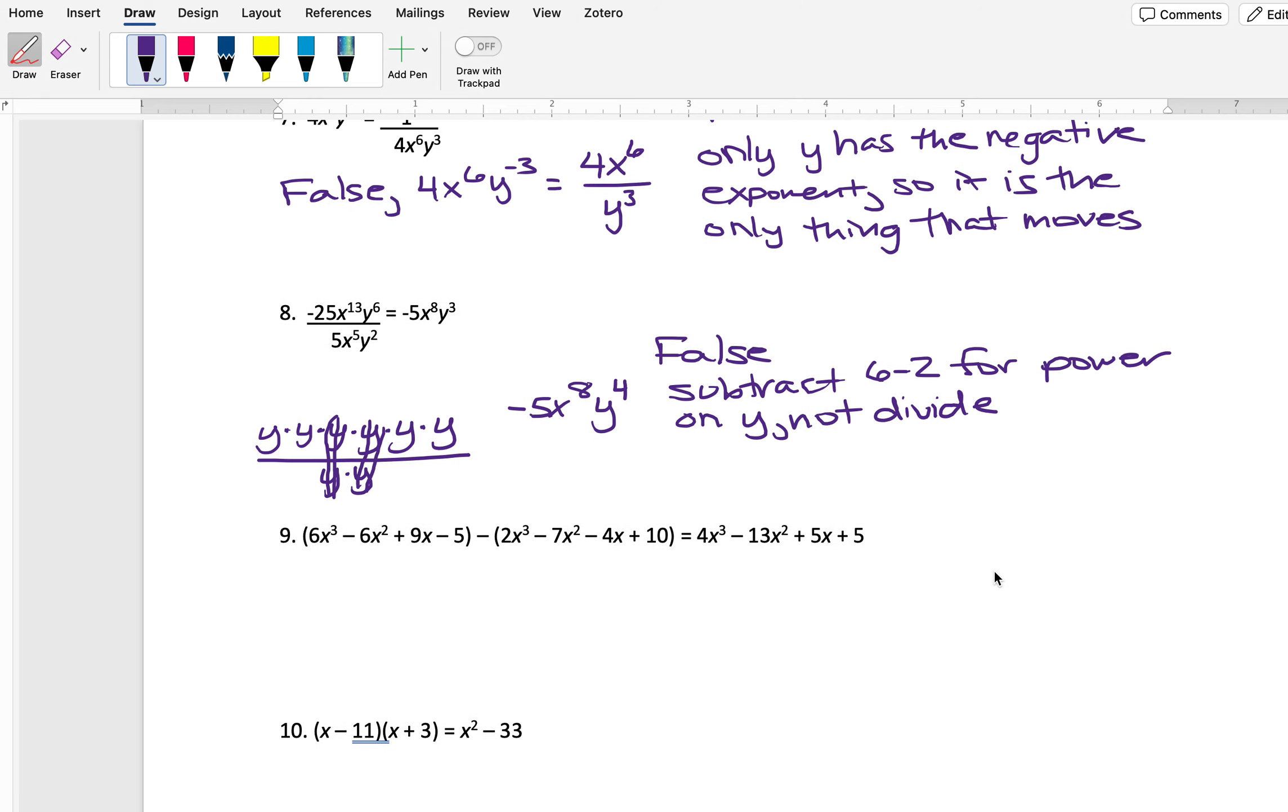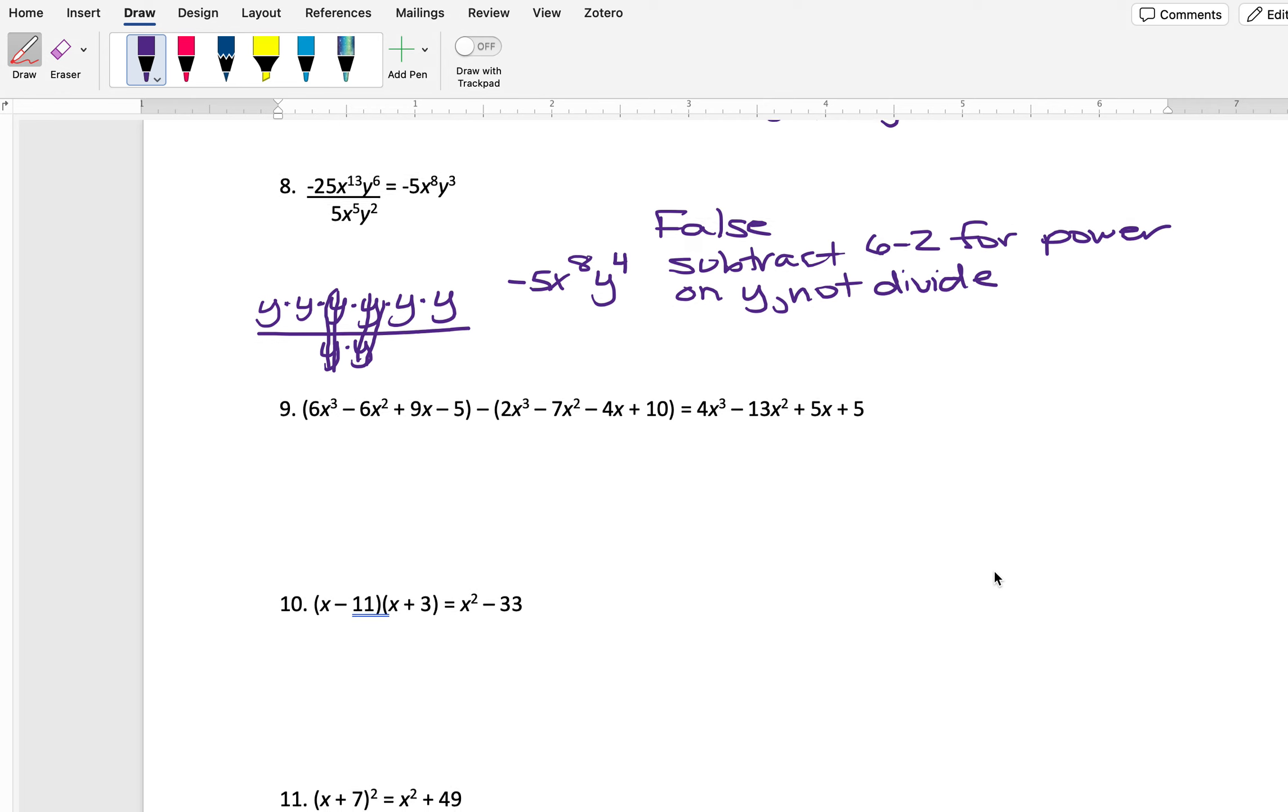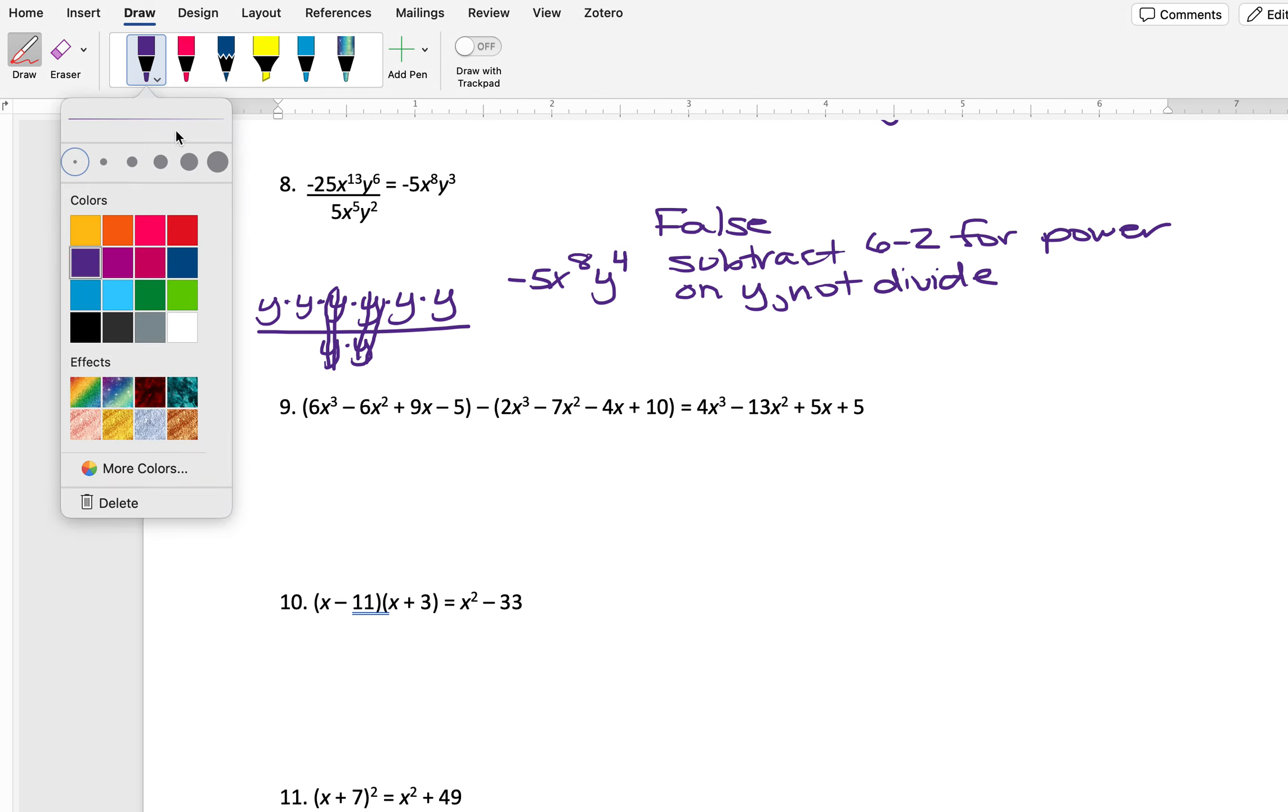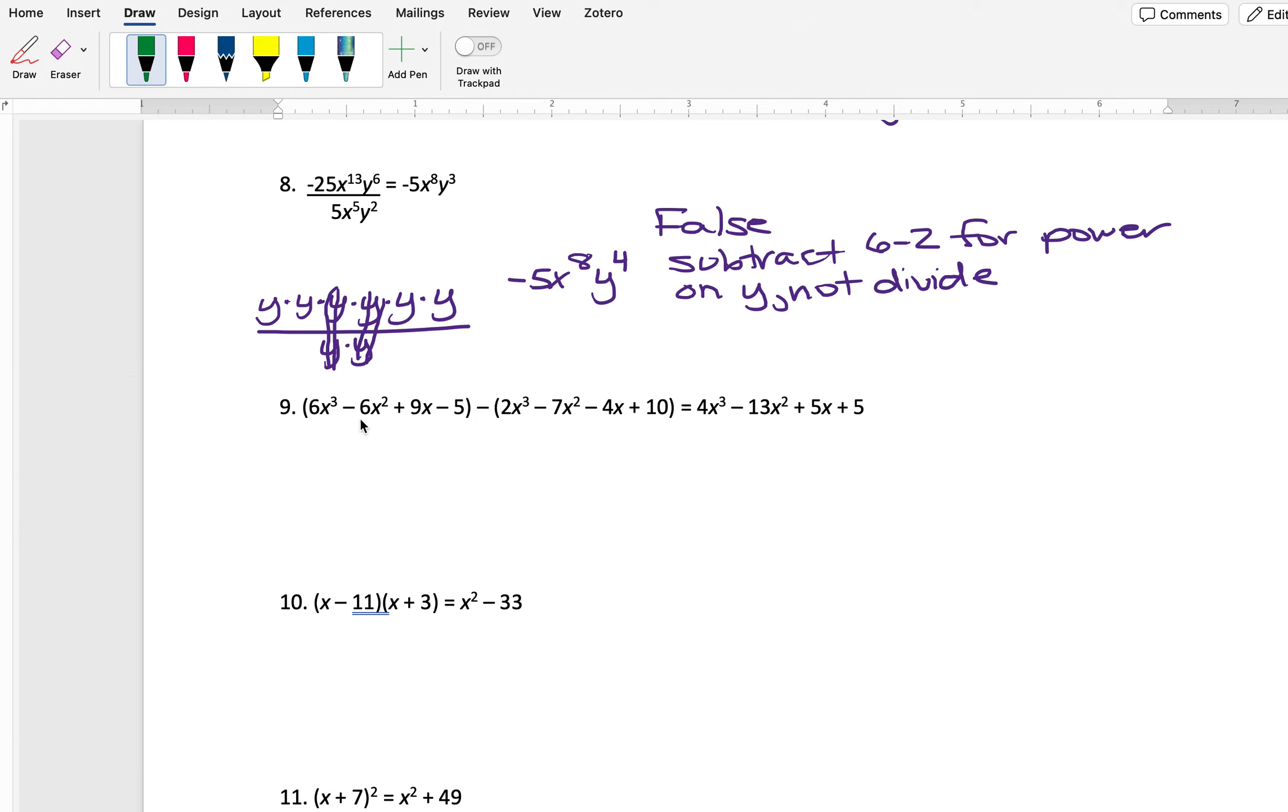Now we are moving into some polynomial stuff here. So this first one, we are subtracting these two polynomials. We want to know if when we subtract them, we get what is here on the right side. So I'm going to switch my marker color because we're going to a new topic. We'll do green. So, we have 6x to the third. We have minus 2x to the third. We're going to subtract that and get 4x to the third.